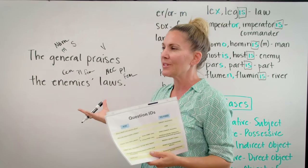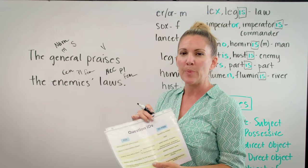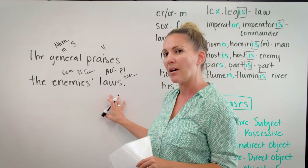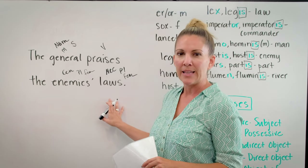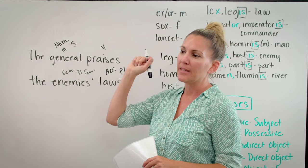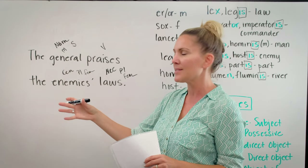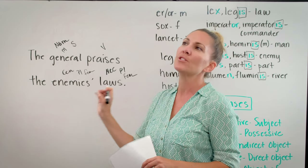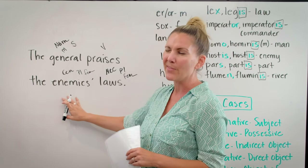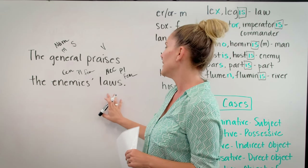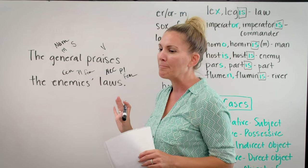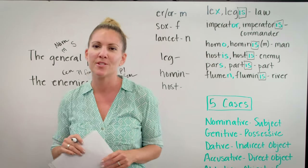There is no such thing as apostrophe S in Latin. They wouldn't say 'the enemy's laws' — they would literally say 'the laws of the enemies.' The reason I don't usually write it that way is because in English 'the laws of the enemies' would be a preposition and object of the preposition — a different case. So when teaching beginners, I have them translate with an apostrophe S, even though technically it doesn't exist in Latin.